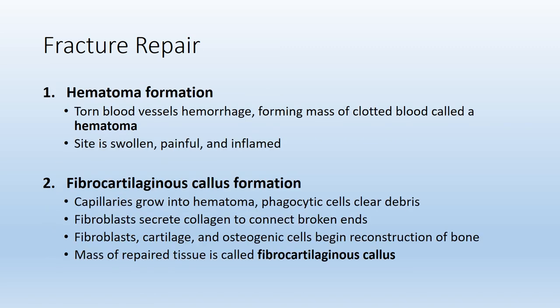Step one is the formation of a hematoma. 'Heme' or 'hemat' means blood. When a bone breaks, the blood vessels coursing through and surrounding it also break. Those blood vessels hemorrhage or bleed out, eventually forming a mass of clotted blood known as a hematoma.